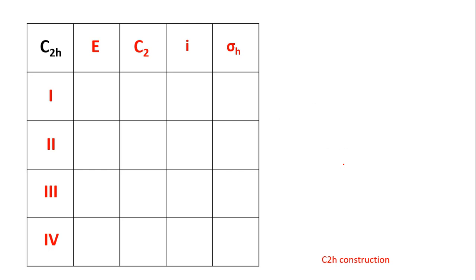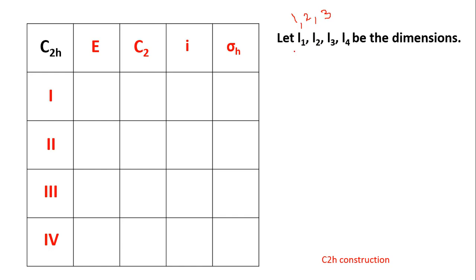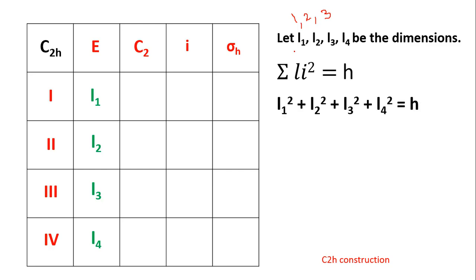Now we come to the dimensions. The dimensions of the characters shown below E can have values 1, 2, or 3. Let the dimensions be L1, L2, L3, and L4. According to the Great Orthogonality Theorem, the summation of L² equals H, where H is the total number of symmetry operations. In this case the operations are E, C2, I, and sigma H — four operations total.